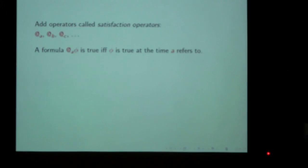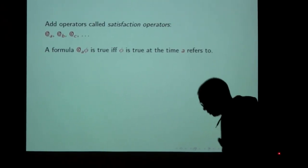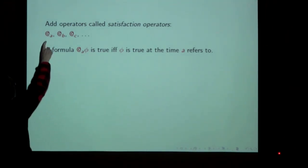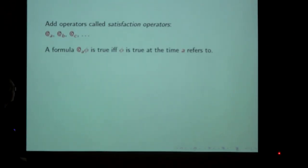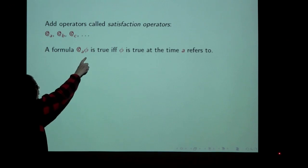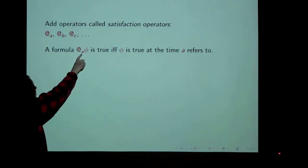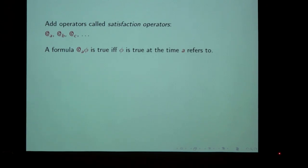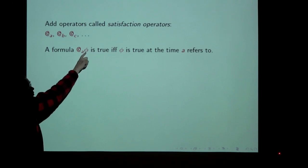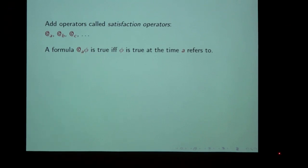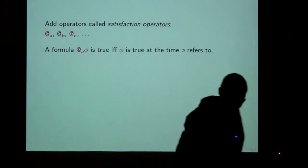The second piece of hybrid logical machinery is what is called a satisfaction operator. For any nominal, we add a new modal operator pronounced 'at a.' A formula 'at a, phi' is true if and only if the formula phi is true at the point in the model that a refers to. So if the points stand for times, this formula says that phi is true at the time a refers to.